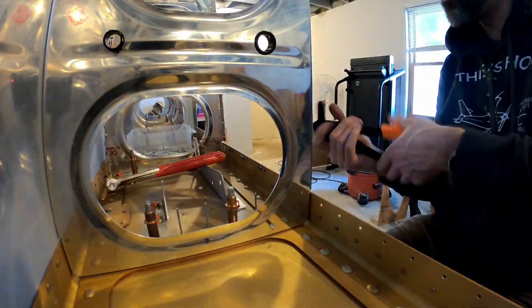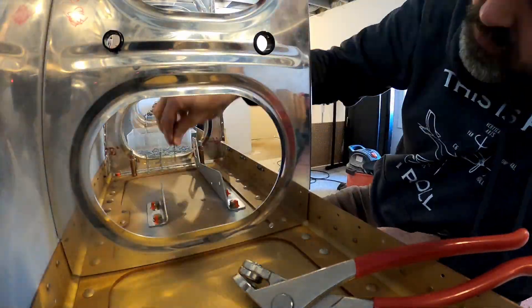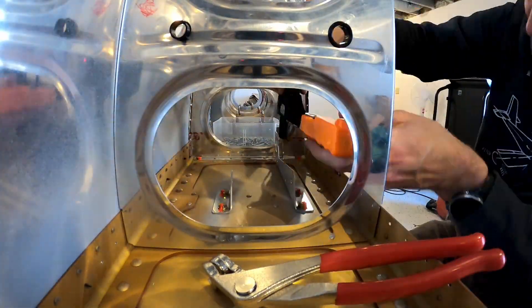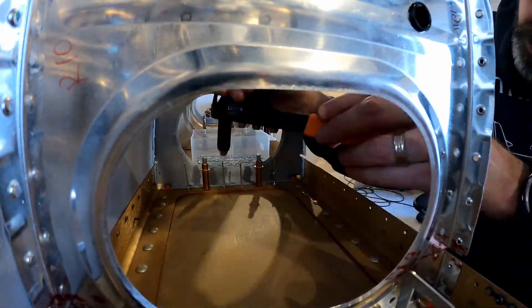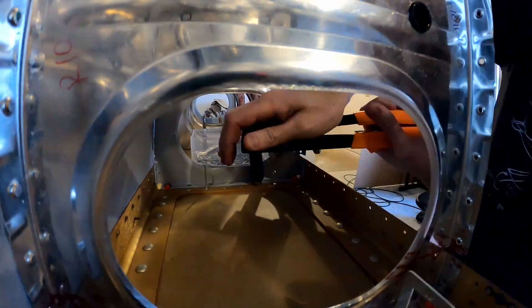the top side of the wing attaches by being rivet gun and bucking bar. Had my wife help me with that. She is not on camera because the camera is going to be inside here this whole time apparently.